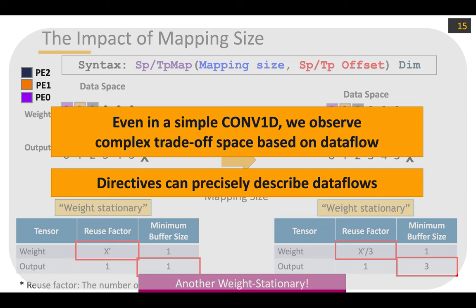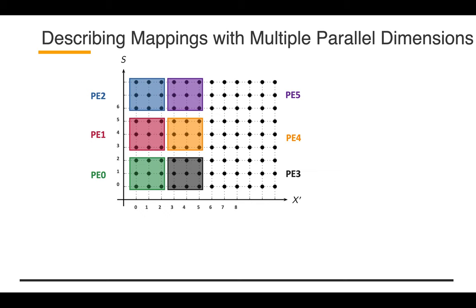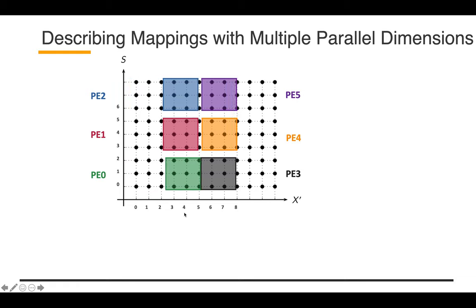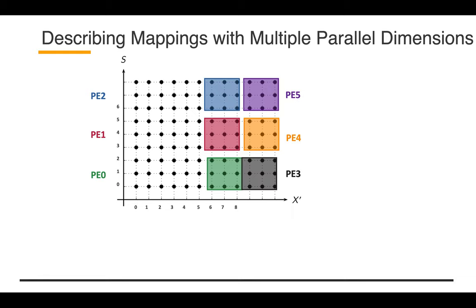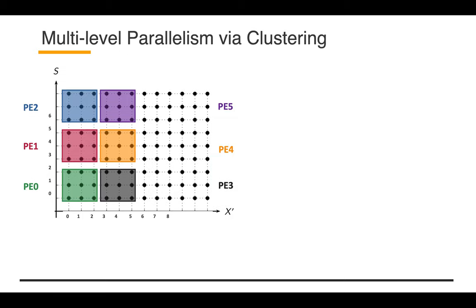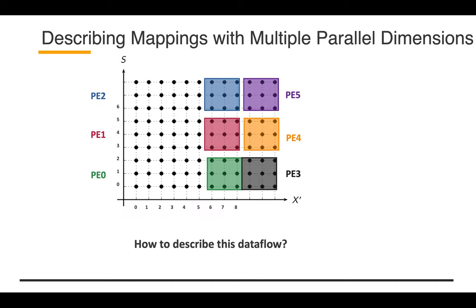So far we've seen a relatively simple example, but let's take a look at a slightly more complex one. Still on the CONV1D operation with the same computation space, we now have six PEs and want to map computation in a specific 2D pattern, with the mapping moving in a certain direction over time. The question is: how do we describe this data flow using temporal and spatial map? Actually, that is not possible — that's why we introduced the cluster directive.